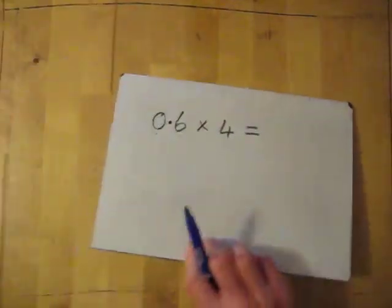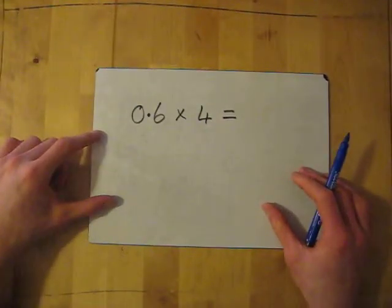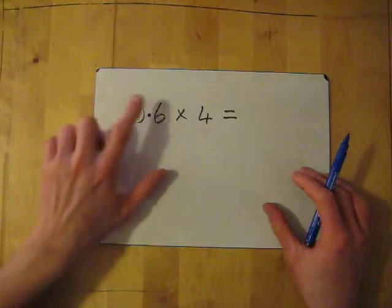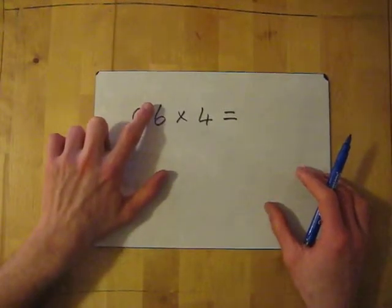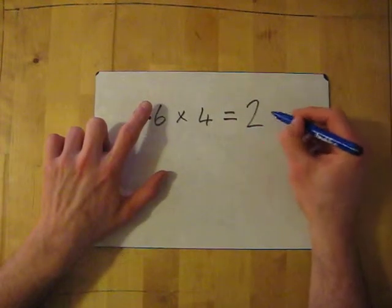So this one here, 0.6 times 4. First thing, forget about decimals. If I do 6 times 4, my answer is 24. Easy.